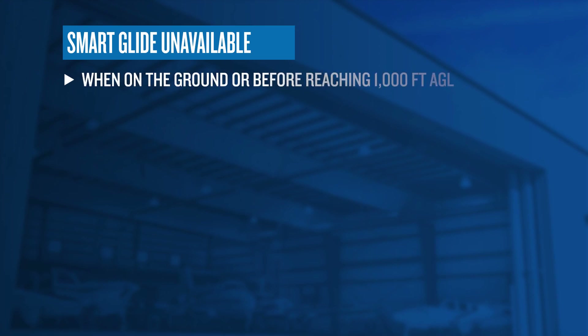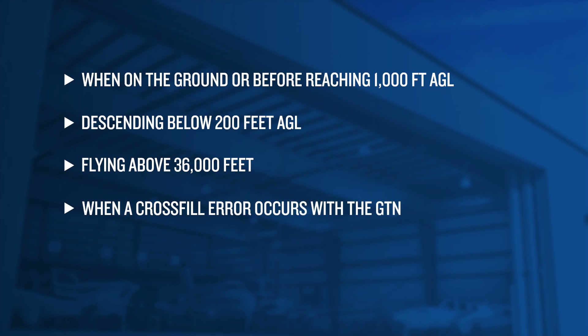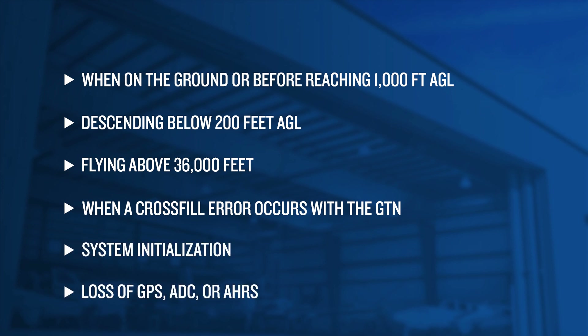Certain limitations do exist. Smart Glide is unavailable when on the ground and below 1000 feet AGL after takeoff, descending below 200 feet AGL after reaching 1000 feet AGL, flying at altitudes above 36,000 feet, when a cross-fill error occurs and the cross-side navigator is GTN-XI, when the system is first initializing, and when one of the following is lost: GPS, ADC, or AHARS.